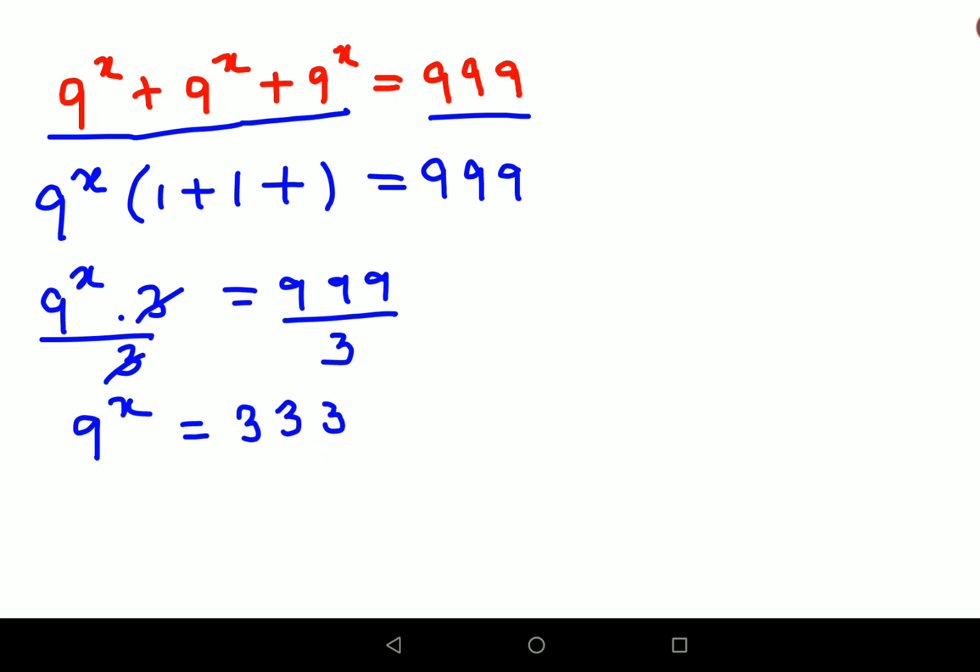Now if you look closely, 9 raised to x can also be written as 9 into 37. When you multiply 9 and 37 you will get the answer as 333. But after this you are stuck. We can't do anything more in this particular sum. So here what we will do is we will apply log, log on both sides.